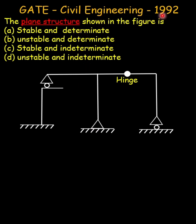Given in GATE Civil 1992, we are asked to identify whether the given plane frame is stable or unstable, and determinate or indeterminate. The general rule in determining the static indeterminacy is the number of unknown reactions minus the number of available equations.